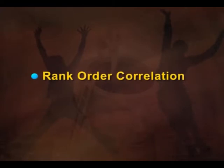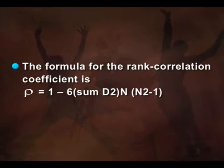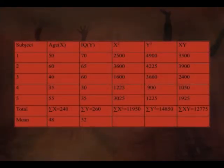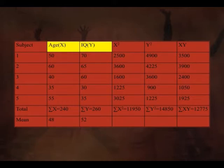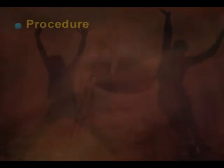Now we go to the next formula: rank-order correlation. It finds the relationship on ordinal data and is represented by the symbol rho. This also finds the relationship ranging from plus 1 to minus 1. As seen from the slide, the formula for the rank correlation coefficient is: rho = 1 − [6·Σd²] / [n(n² − 1)]. When we apply the formula, we again have 5 subjects with their age and IQ, which we must order according to rank.